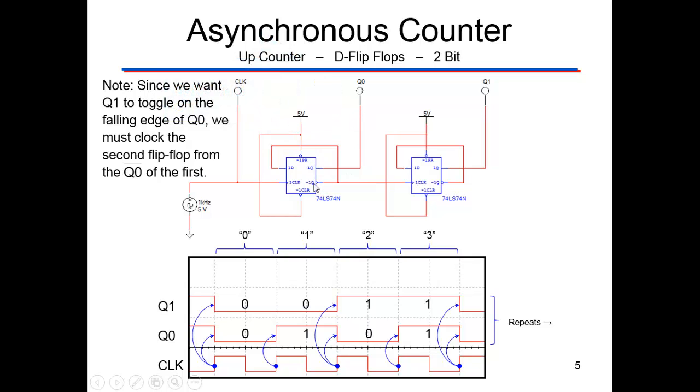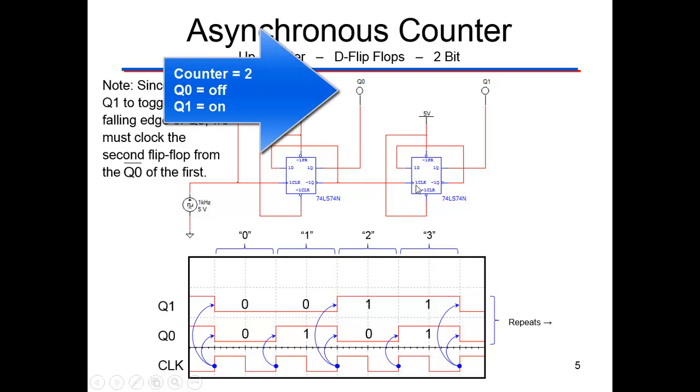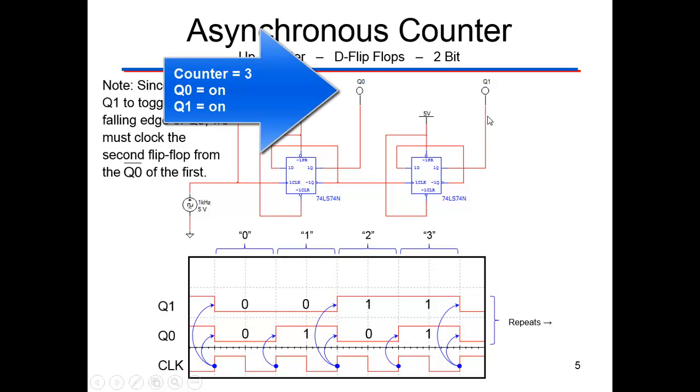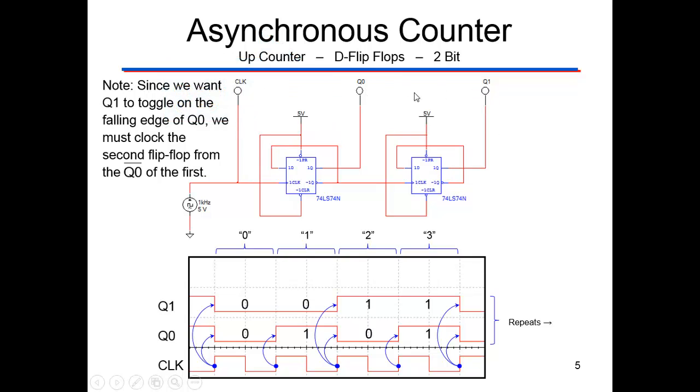We take not Q and feed it into the clock. Again, we've turned preset and clear off here. We take not Q and feed it in. This Q is the next output. This one is the most significant bit. When we have the number zero, these will both be off. Then one, this one will be on, Q zero. Two, Q zero will be off. This will be on. Then three, they will both be on.